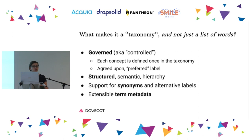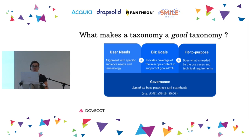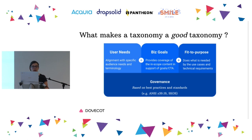I want to focus today on the governed and controlled part, because that is what gets left out. What makes a taxonomy a good taxonomy is a foundation of governance based on practices and standards. There's an ANSI standard for the development of taxonomies — it's about 45 pages, extremely dry technical spec, but it is the foundation of a lot of the work we do. We take that standard and look at the user needs, the goals of the organization, and what the taxonomy actually needs to do from a technical use case perspective.